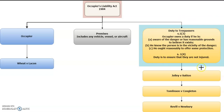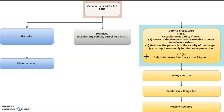Section 1(3) of the 1984 Act lists the circumstances that give rise to a duty of care. It states that occupiers owe a duty to a non-visitor if: (a) they are aware of the danger or have reasonable grounds to believe it exists; (b) they know or have reasonable grounds to believe the other is in the vicinity of the danger or may come into it; and (c) the risk is one in which, in all the circumstances, they may reasonably be expected to offer the other some protection. If all three circumstances are present, the occupier owes a duty of care, and under section 1(4) the duty is to ensure they are not injured — it does not extend to liability for property.